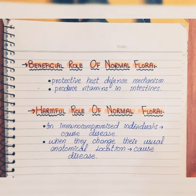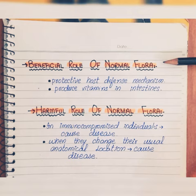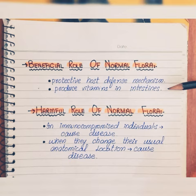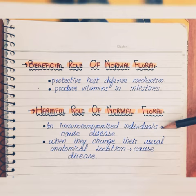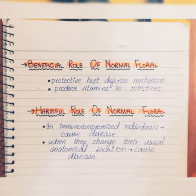These normal flora have both positive and negative aspects for human health. Their beneficial role includes supporting the protective host defense mechanism and producing vitamins — for example, E. coli produces vitamin K and vitamin B complex, which are helpful in blood clotting and metabolism. On the negative side, in immunocompromised individuals they can cause disease, or when they change their usual anatomic location they become pathogenic.